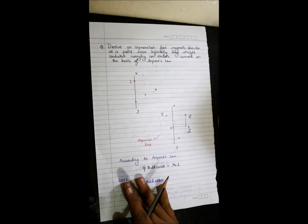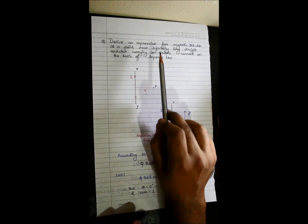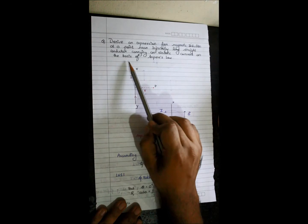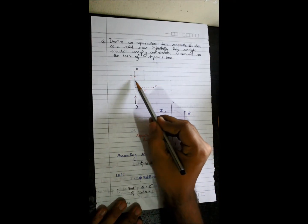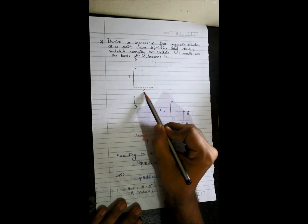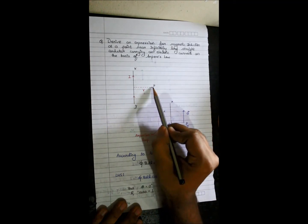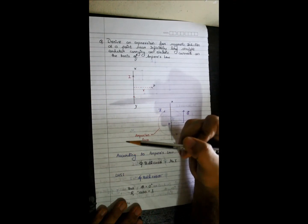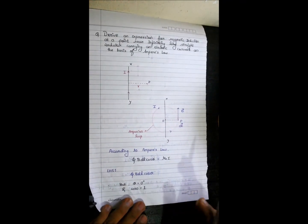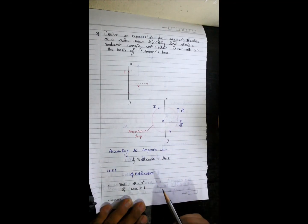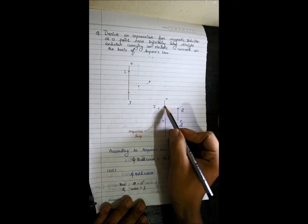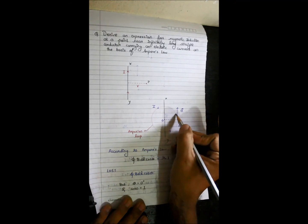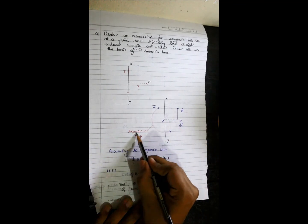Now let us proceed to the applications of Ampere's law. The first question: derive an expression for magnetic induction at a point near an infinitely long straight conductor carrying electric current, on the basis of Ampere's law. We have a long straight conductor with current I passing through it, and a point P at a distance small r from the conductor. We have to calculate magnetic induction at point P. My magnetic field is generated in a circular form — I mark a circular Amperian loop.